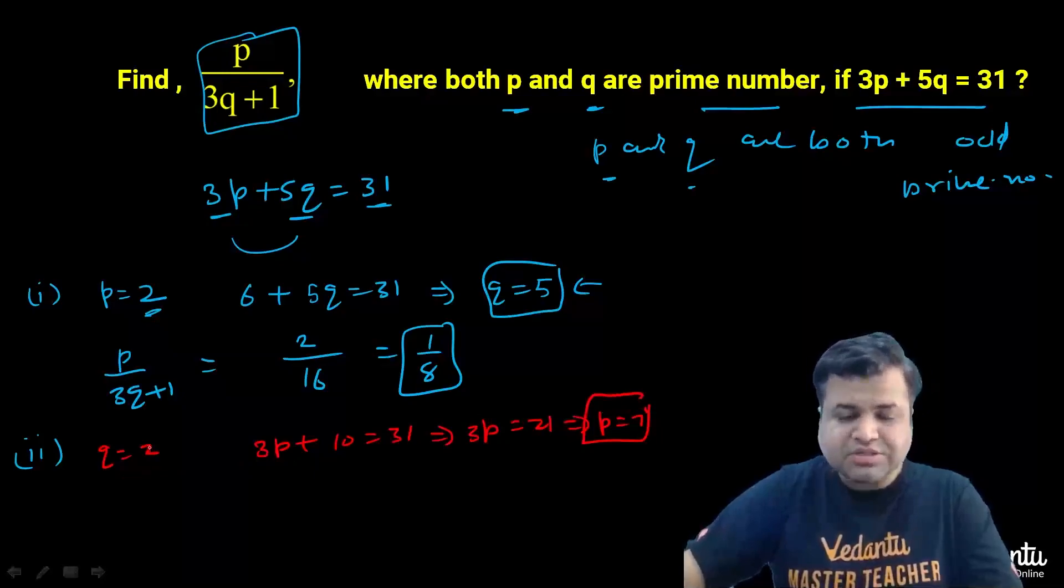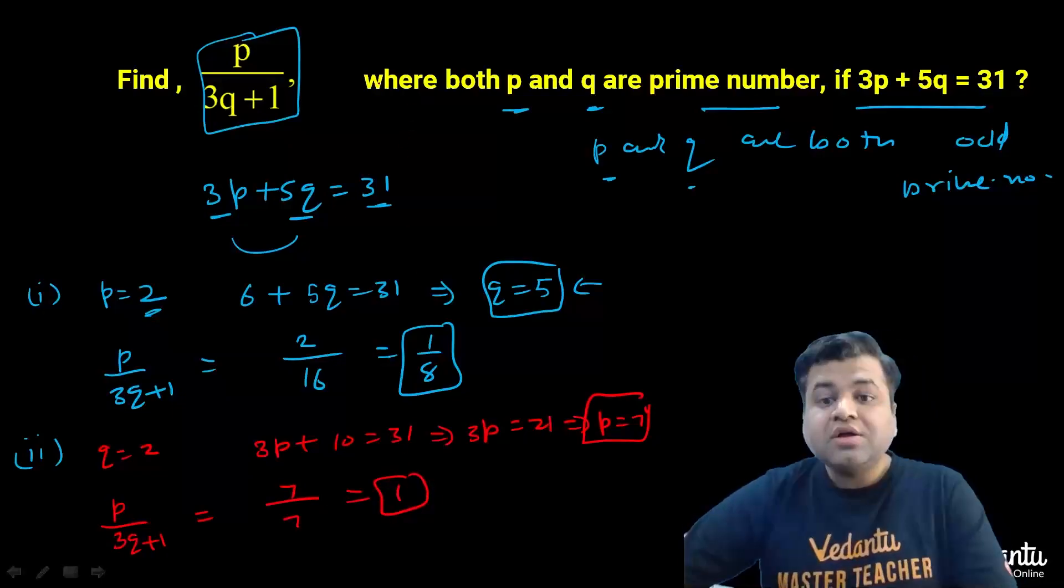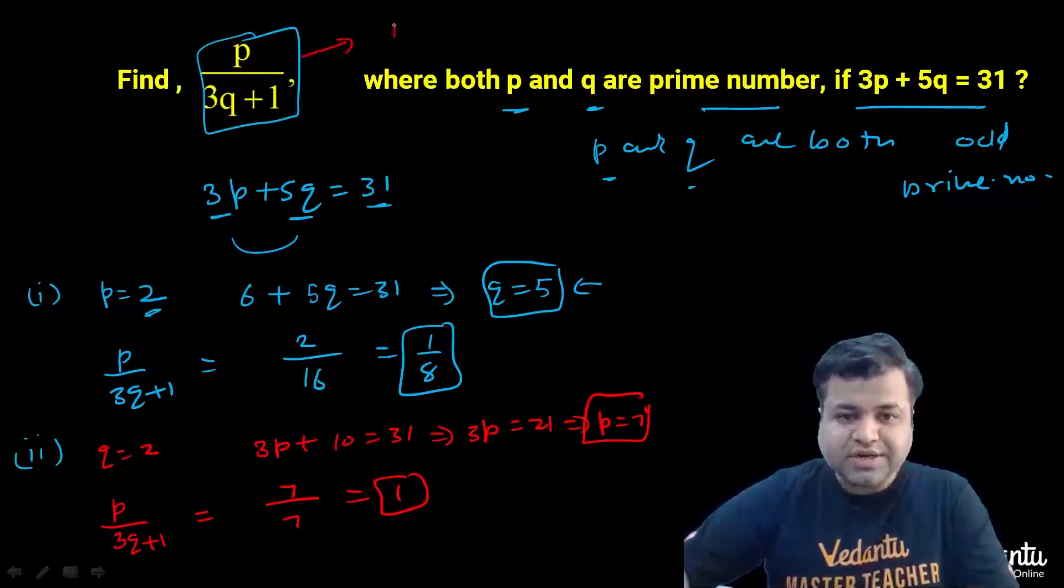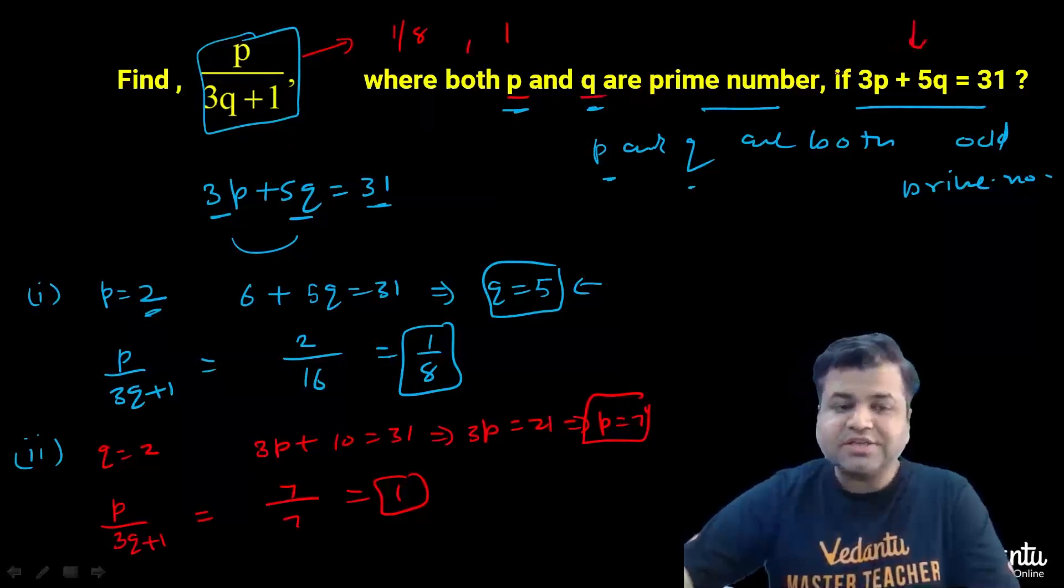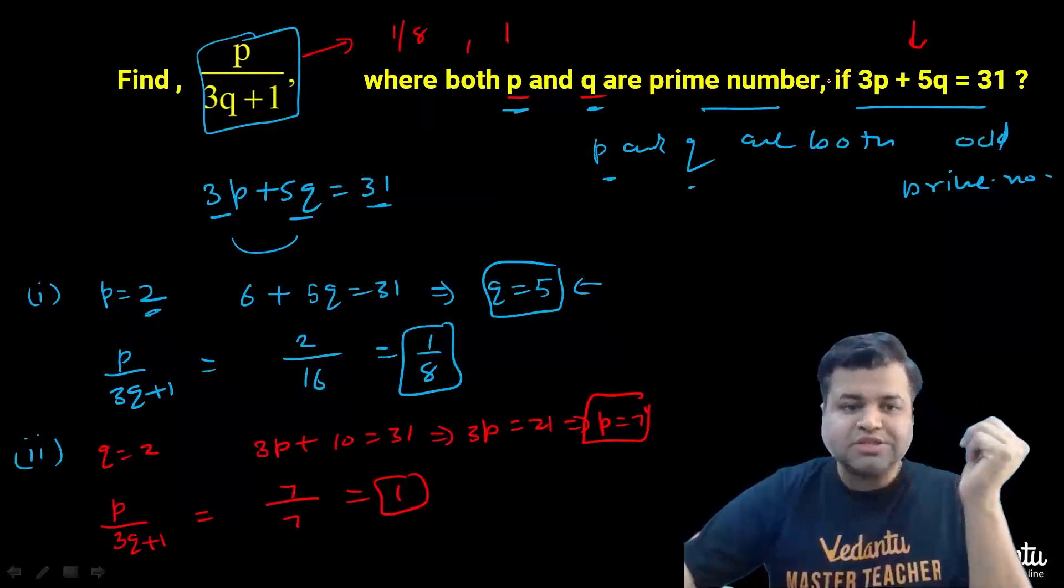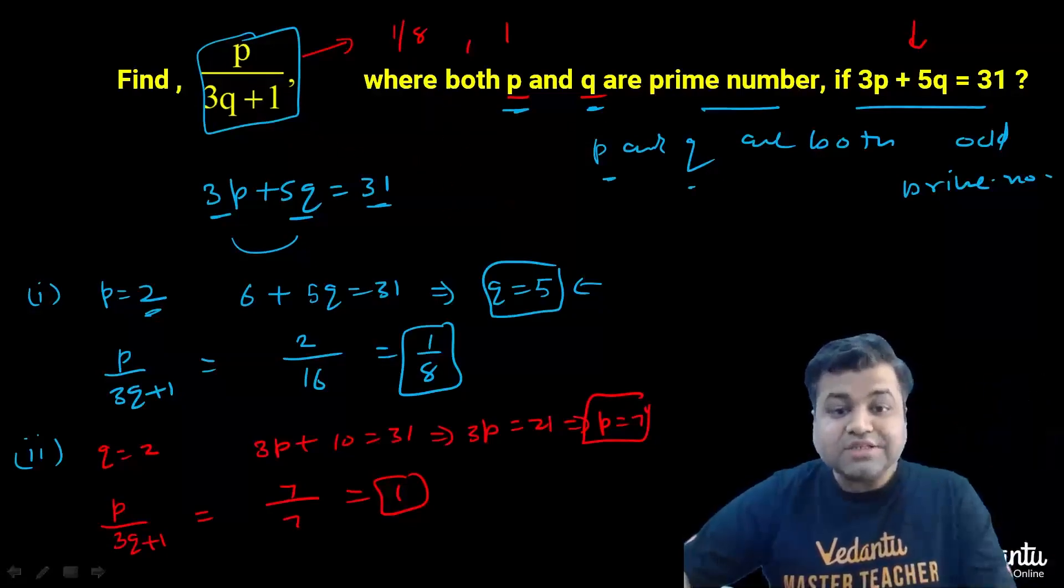So this is also a possible scenario. In this scenario, P upon 3Q plus 1 comes out to be—P is 7, Q is 2—7 upon 7, that is 1. So the point is, this can have two distinct values: 1 by 8 and 1, where both P and Q are prime numbers satisfying the given condition.